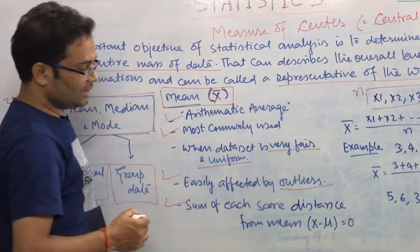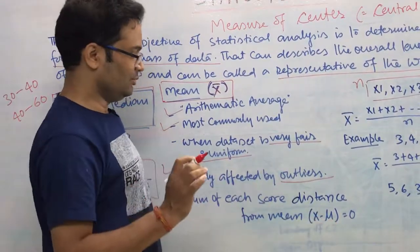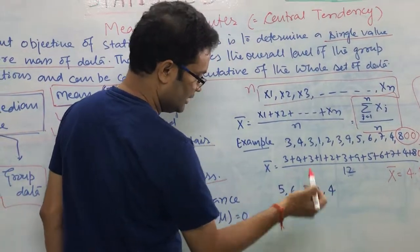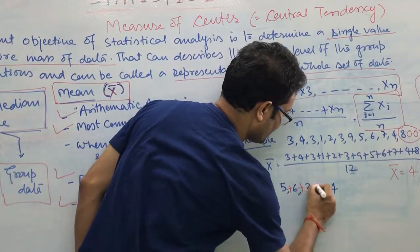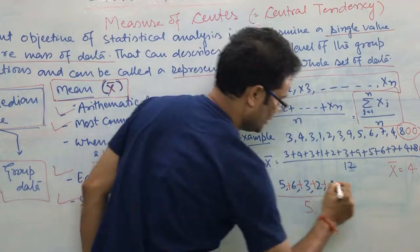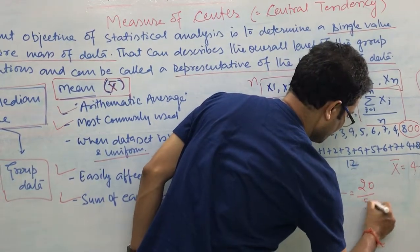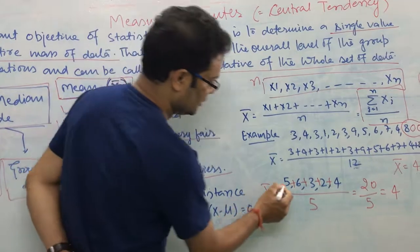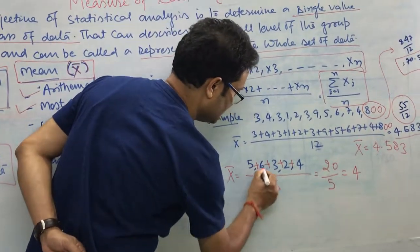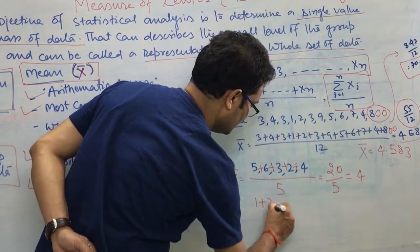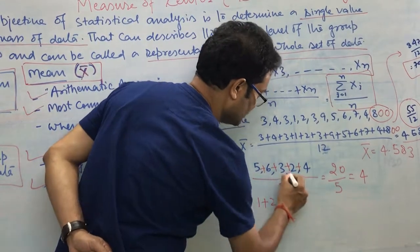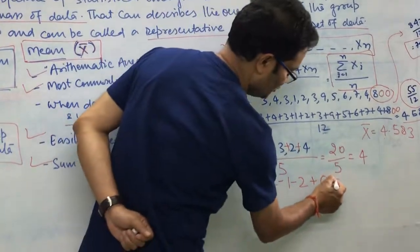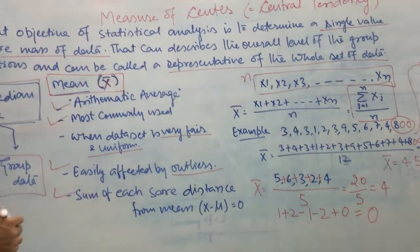Second thing: the sum of each score's distance from the mean is always zero. For easy example, suppose I have this data: 5, 6, 3, 2, 4. Calculate the mean — it is 20 by 5, which is 4. Now check the distance of each data point from the mean: 5 minus 4 is 1, 6 minus 4 is 2, 3 minus 4 is minus 1, 2 minus 4 is minus 2, 4 minus 4 is 0. If you add all these numbers, you will always get 0. So this is the property of the mean.